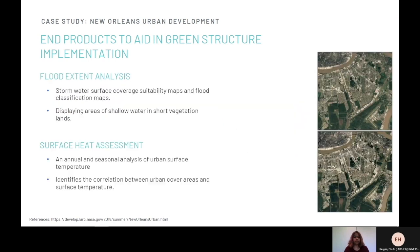The third product was the Flood Extent Analysis, which contains stormwater surface coverage, suitability maps, and flood classification maps to help in identifying flooded lands, as well as displaying areas of shallow water and short vegetation lands. Finally, the Surface Heat Assessment provides an annual and seasonal analysis of urban surface temperature to learn how communities and stormwater threats are affected by temperature, and helps identify the correlation between urban cover areas and surface temperature over time.